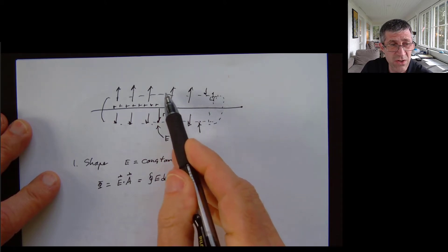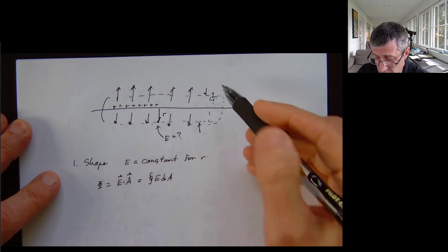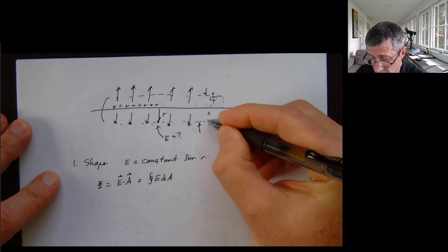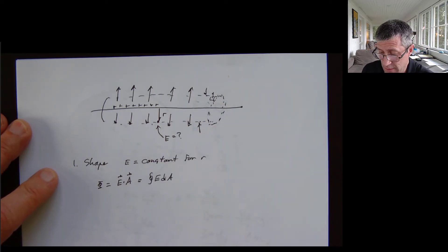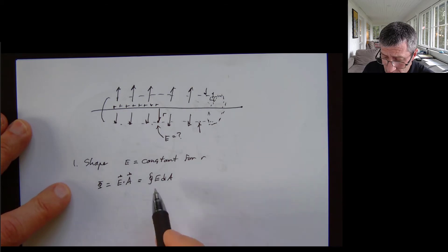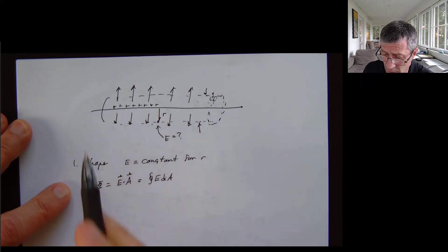This is going to be the closed surface integral of E dA. So I'm going to add up all these areas all the way across the surface, all the way across this surface of my Gaussian surface. That's a closed surface integral.